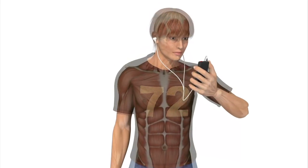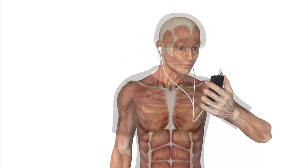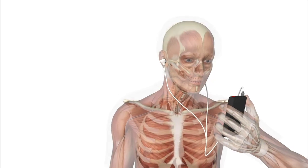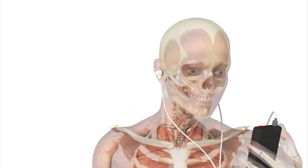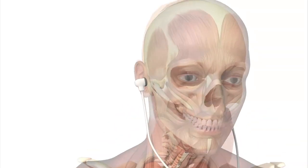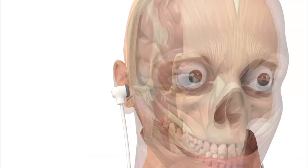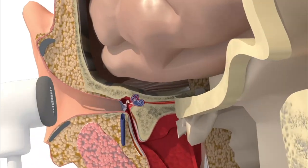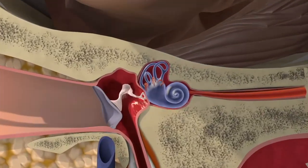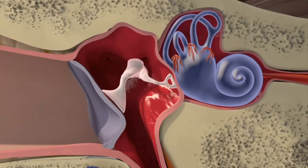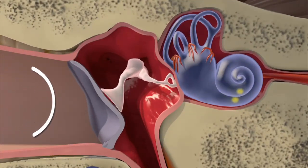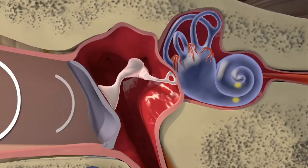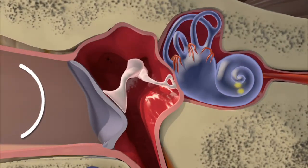We define sound as vibrations in the air that the ear detects and the brain interprets as sound. The process by which this is completed is best explained in the visual you can see on your screen.